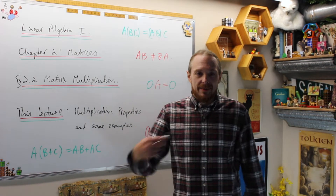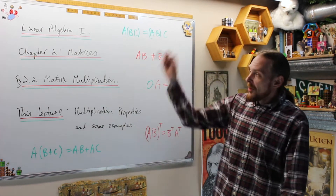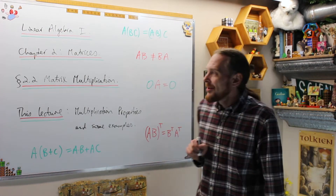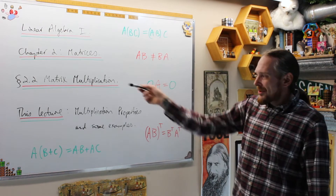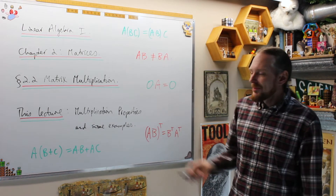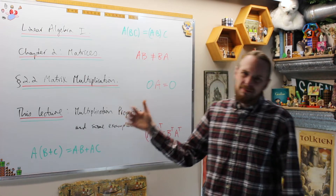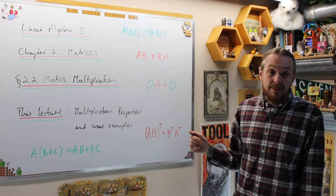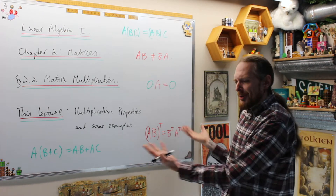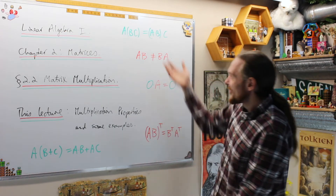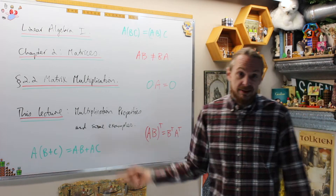Welcome back. This is the Tudor Wizard, I'm Adrian. Please subscribe right here and hit the notification bell. We're doing Linear Algebra One, this is Chapter Two: Matrices, Section 2.2 is matrix multiplication. What we're going to do is squeeze in a bunch of matrix multiplication properties and some examples, just so that you see when you want to start using algebra with these to solve linear systems. These are the properties that we're going to talk about today.